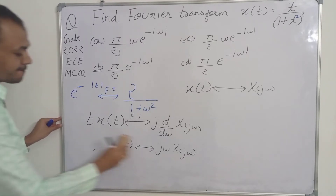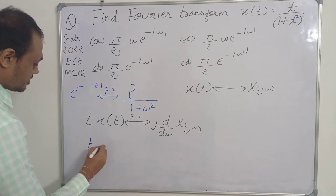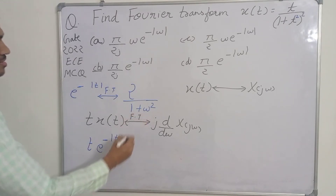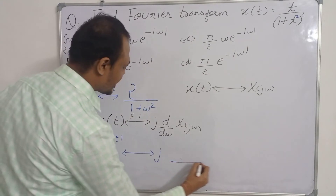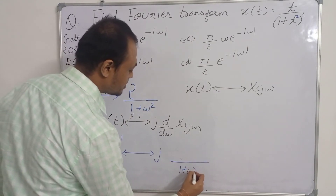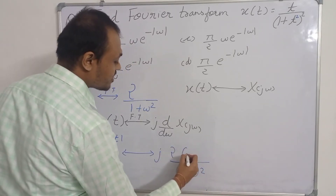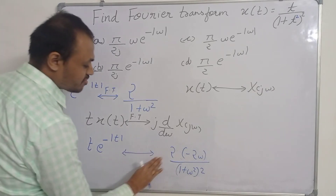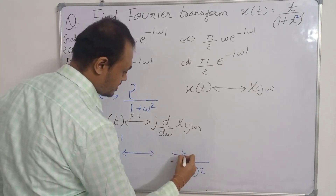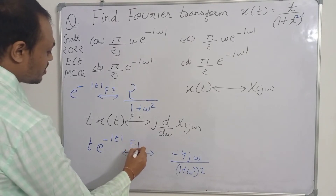Now if we multiply e^(-|t|) by t, we need to differentiate 2/(1+ω²) with respect to omega and multiply by j. Differentiating 2/(1+ω²) gives −2 · 2ω / (1+ω²)², so the result is −4jω / (1+ω²)². This is the Fourier transform of t · e^(-|t|).